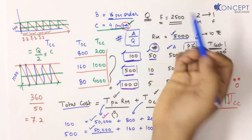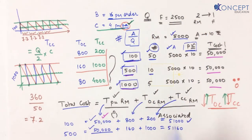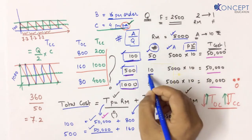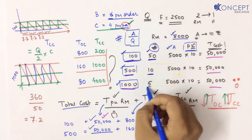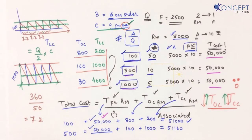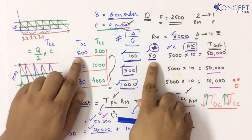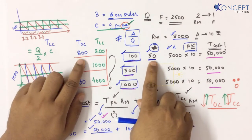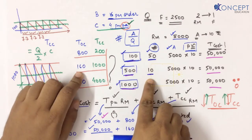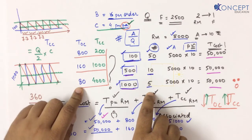All I had to do was find my total ordering cost, which was very simple. If I know the number of orders is 50, 10, or 5, and I always multiply by 16, I can easily compute my total ordering cost: 50 × 16 = 800, or 10 × 16 = 160, or 5 × 16 = 80.